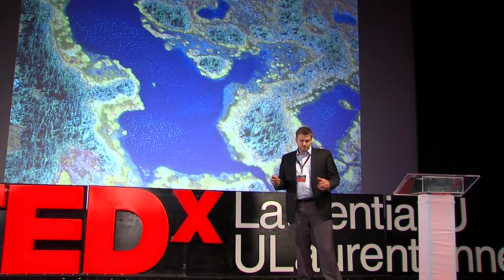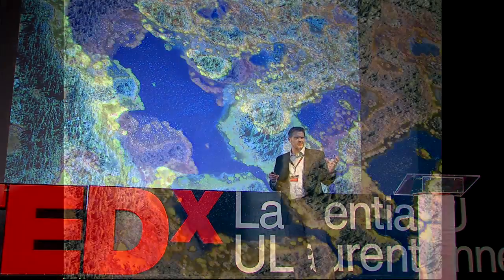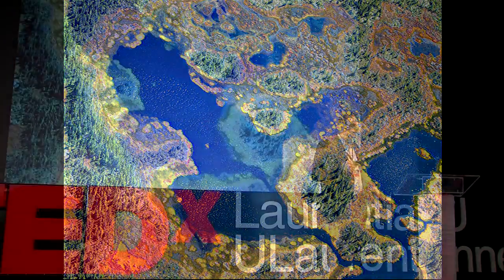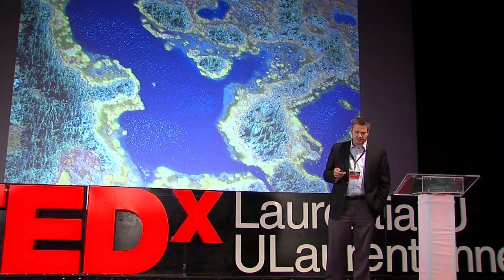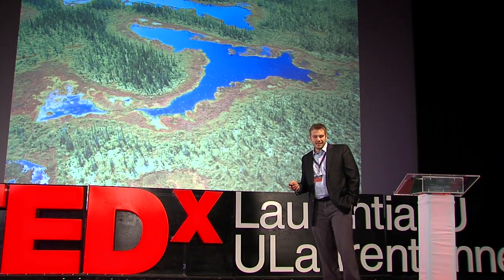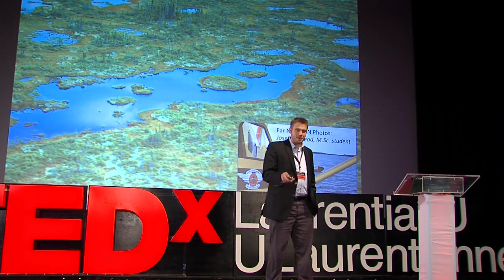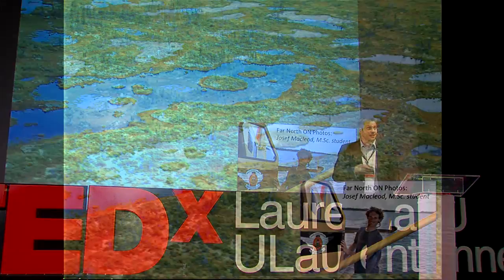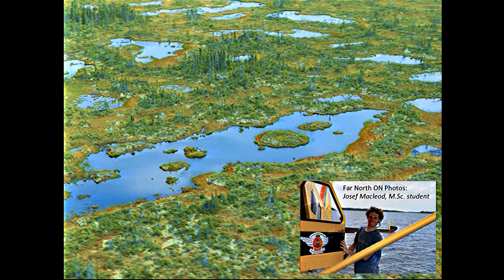The next few slides show pictures of this landscape. Only about 2% of the land surface is upland forest — the rest is peatland, interspersed with many shallow lakes. The wetlands and aquatic systems are really intimately connected and influence the water quality of each other. These pictures are from a master's student at the Living with Lakes Centre, Joseph McLeod, supervised by Bill Keller and John Gunn, who conducted his research in this remote, unique, and very important landscape.